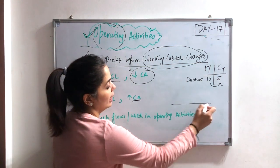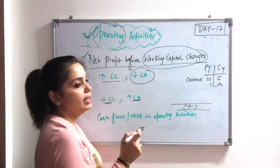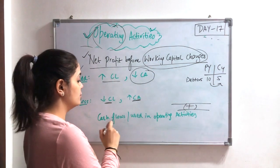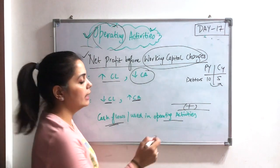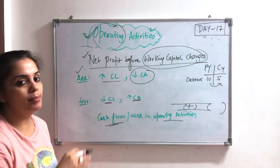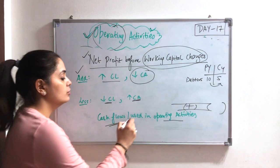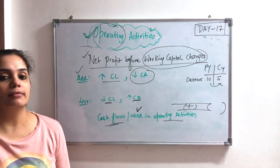So last, if my amount is positive here after all the adjustments, then my cash flows from operating activities. If my negative comes, that I have a balance in the negative, that I have a calculation in the minus, then cash used in operating activities. Why?